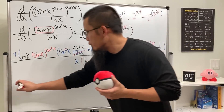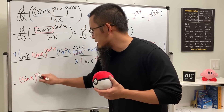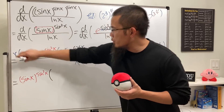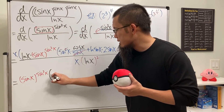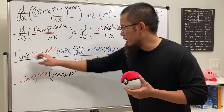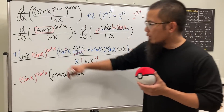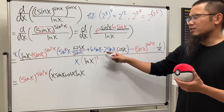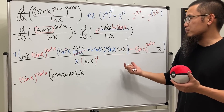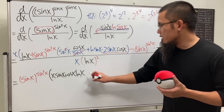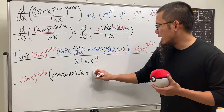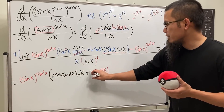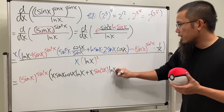Now I'll factor sin(x)^(sin²(x)) out in front. For the first part, distributing x gives us x·sin(x)·cos(x), and then we have ln(x). For the second part, distributing gives us sin(x)·cos(x)·x·ln(sin(x)), and notice sin(x)·cos(x) with the factor of 2 is actually sin(2x) by the double angle identity.